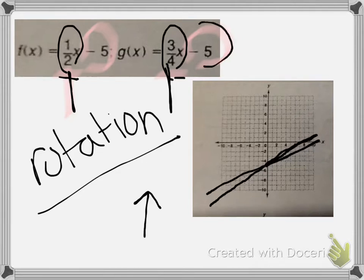That's a rotation. If I had changed the y-intercept, it would have been a translation. If I had made one slope negative but kept the same number, it would have been a reflection. Go ahead and start your assignment.